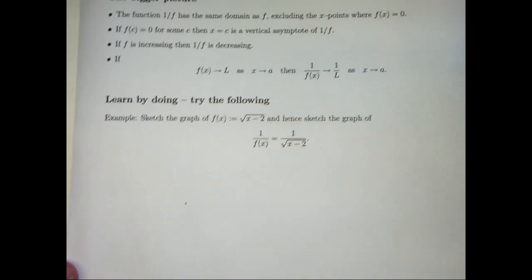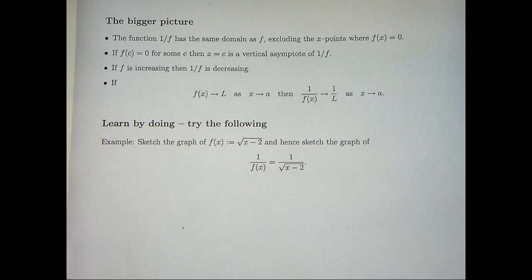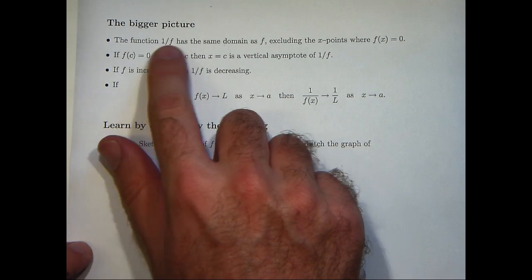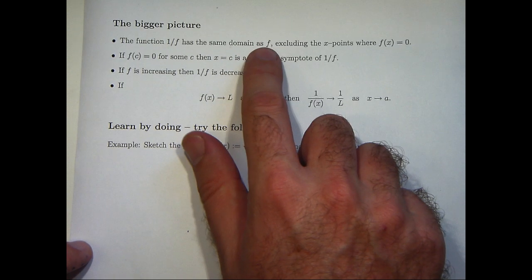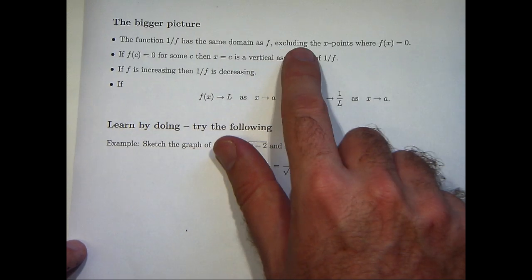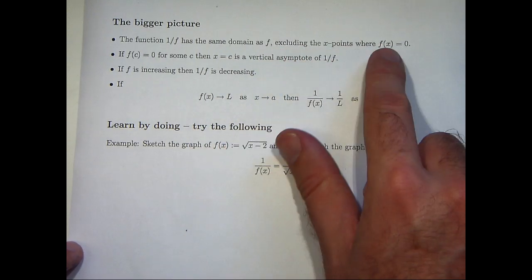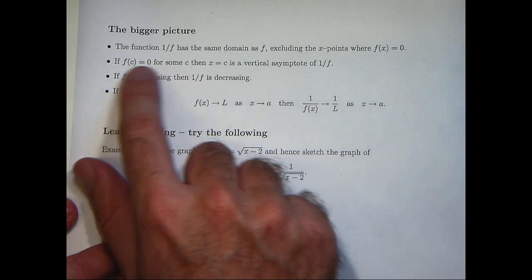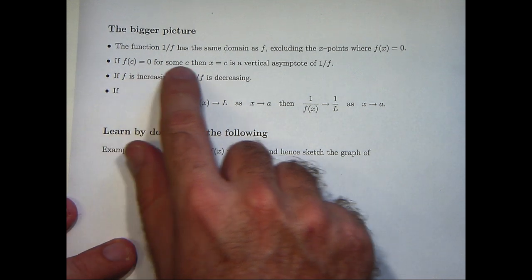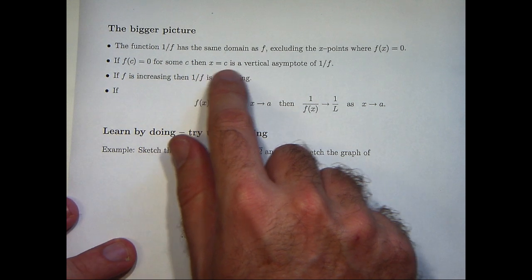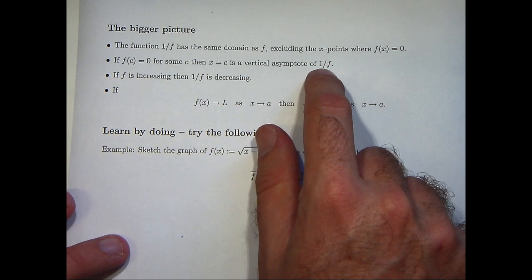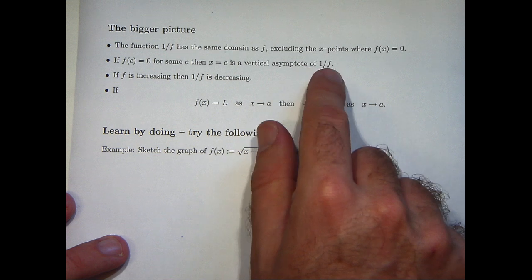What's the bigger picture? What are some ideas that will work in general for these kinds of problems? Well, the reciprocal function has the same domain as the original function, except you need to exclude the x points where f of x equals 0. Again, that's because you can't divide by 0. If there is a point c where f of c equals 0, then the line x equals c is a vertical asymptote of the reciprocal function. So in the previous example, c was minus 3.